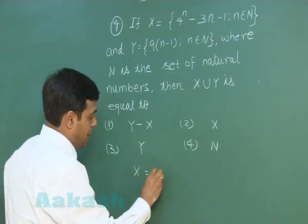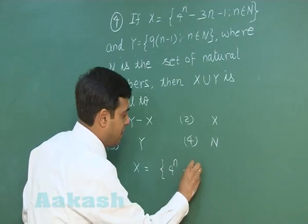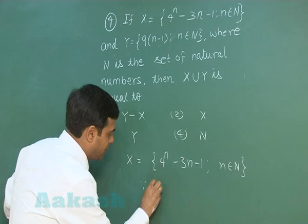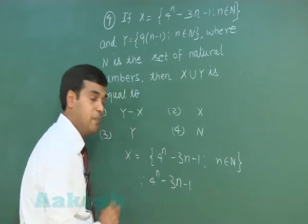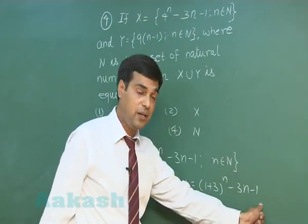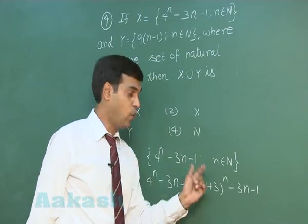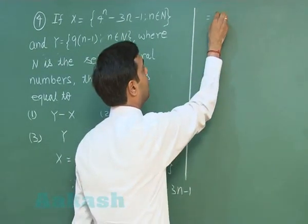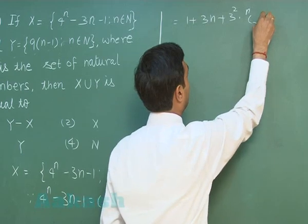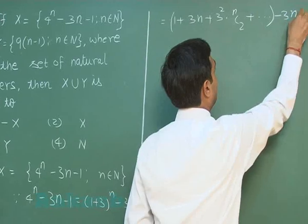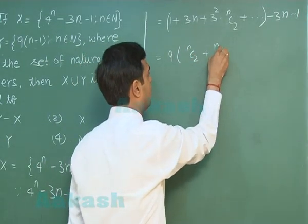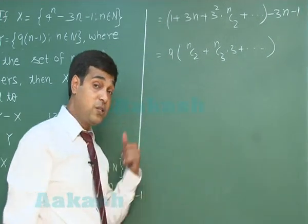X is given as 4 to the power n minus 3n minus 1, where n belongs to the set of natural numbers. Since 4^n minus 3n minus 1 can be written as (1 + 3) to the power n minus 3n minus 1, on applying binomial expansion: (1 + 3)^n = 1 + 3n + 3² · nC2 + and so on, minus 3n minus 1. We observe it is a multiple of 9.